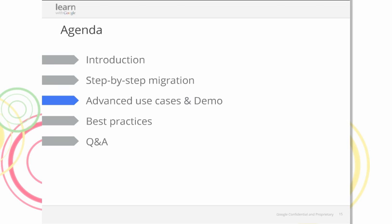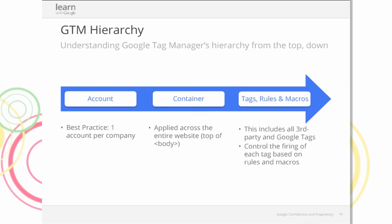Let's get a little deeper with advanced use cases and the demo. At the top-most level is the account — one account per company. Within an account, you can have multiple containers — one container per domain. For the airline example, one container per region-specific site. We also recommend placing the Google Tag Manager snippet at the top of the body. From within the container, you add tags and apply rules and macros — this is where you manage the conditional firing of both Google and third-party tags.